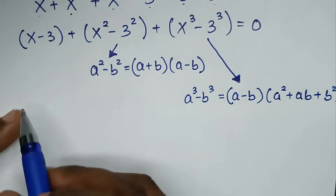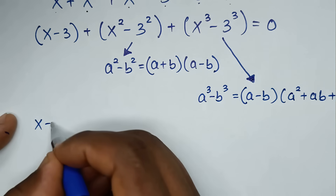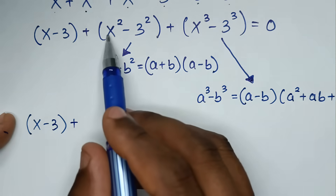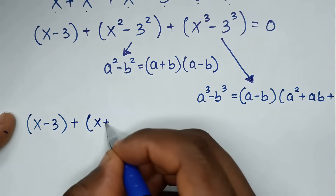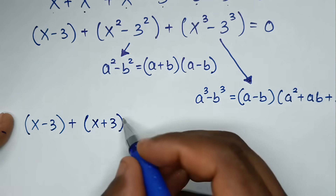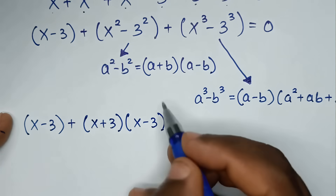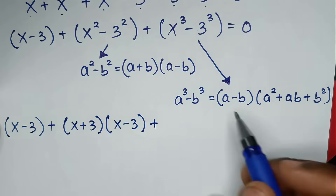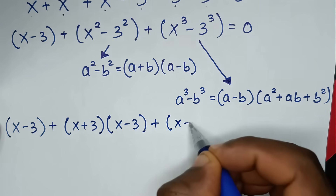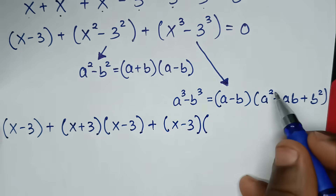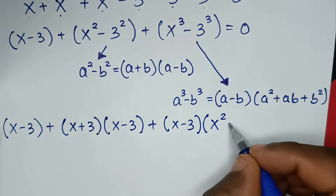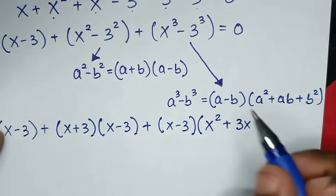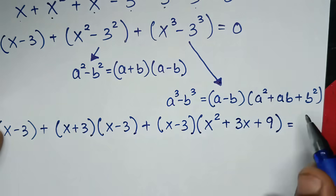So, from our equation, it will be (x minus 3), then plus — applying the difference of squares form — so a plus b will be (x plus 3) and a minus b will be (x minus 3), then plus — applying the difference of cubes rule — so a minus b is (x minus 3), bracket, a squared is x squared, plus ab is x times 3 which is 3x, plus b squared is 3 squared which is 9, bracket, is equal to 0.